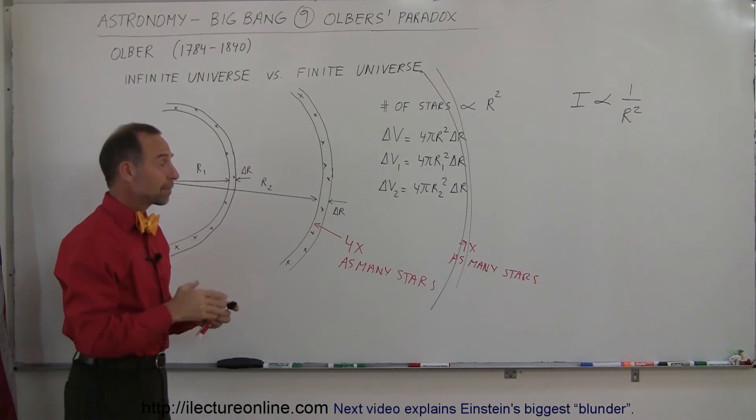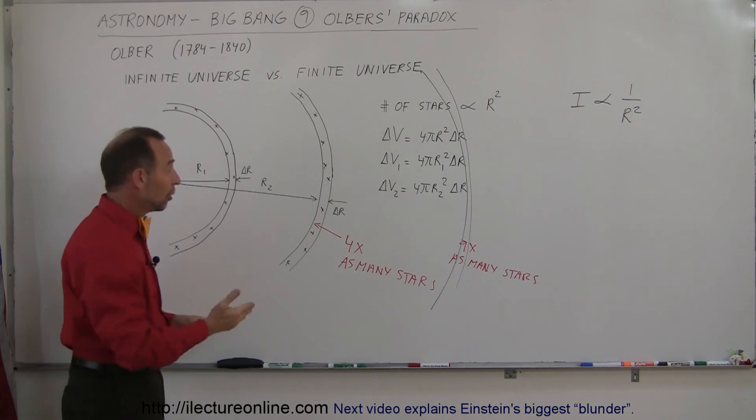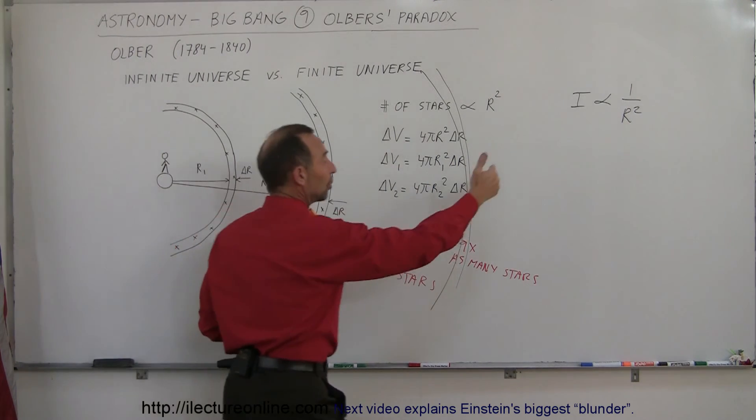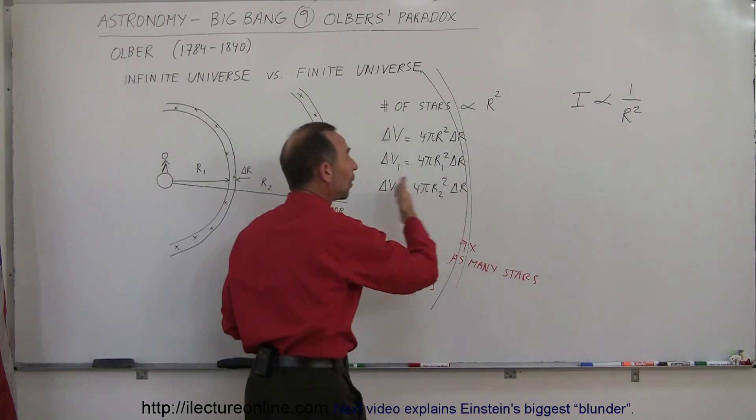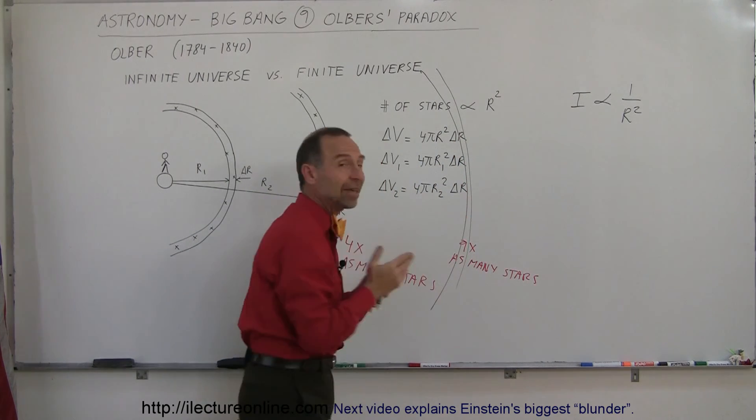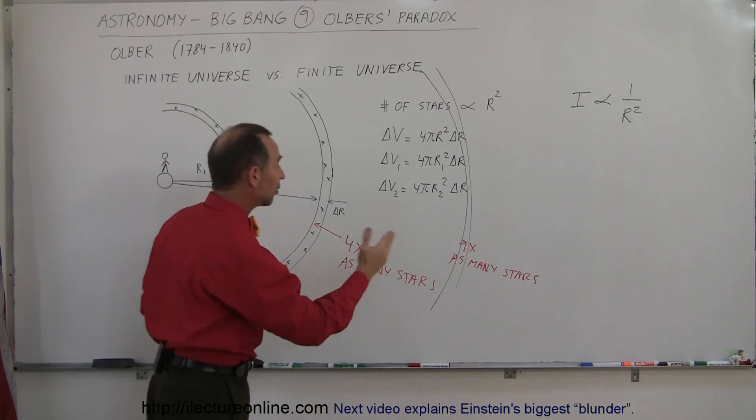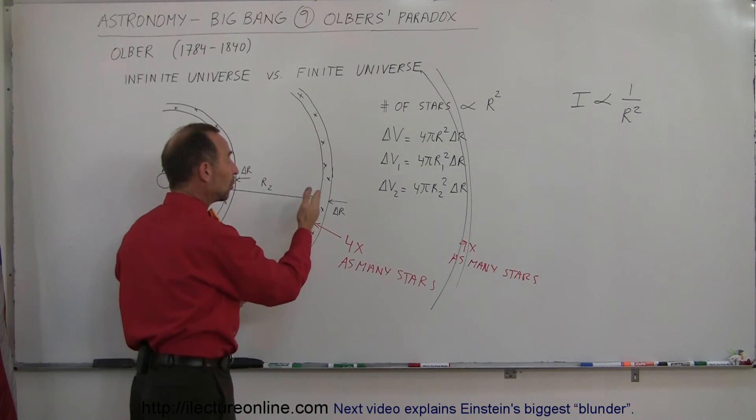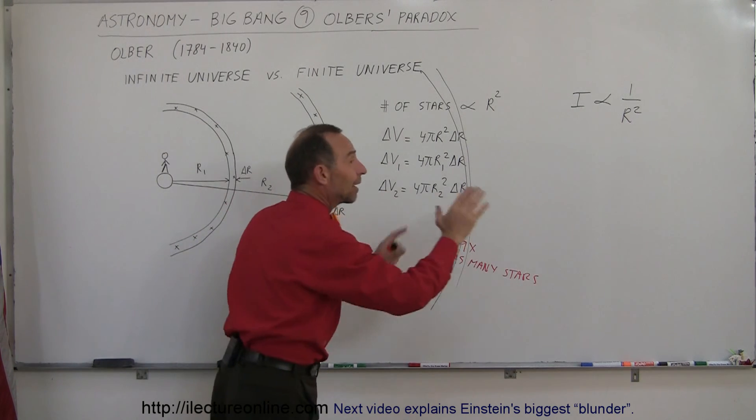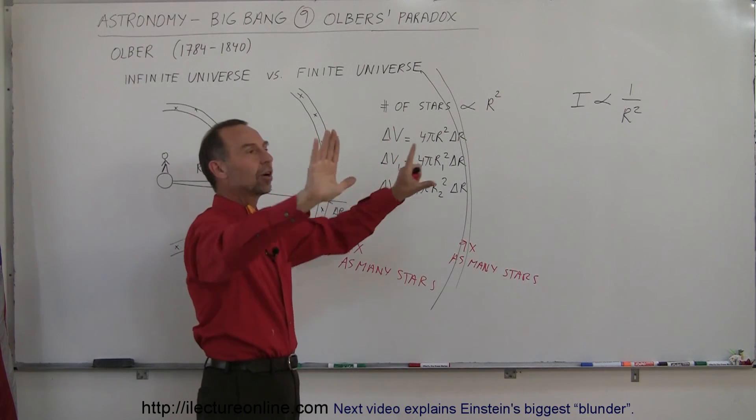So what he's saying is that if this universe is infinite, we can go on forever. There would be so many concentric shells, each one would give off exactly the same amount of light in totality as a shell before. So they would slowly fill up the entire sky with stars.